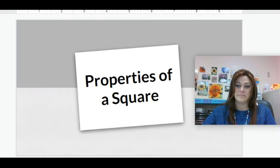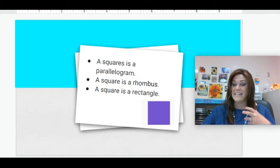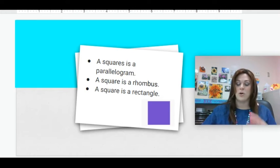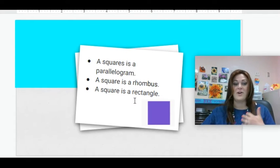Properties of a square. Now a square is very unique because it actually doesn't have any of its own properties. A square is a parallelogram, so all those properties work. A square is a rhombus, all those properties work, and it's a rectangle, so all of those properties work. But what's crazy is that a square doesn't have any properties only to itself.